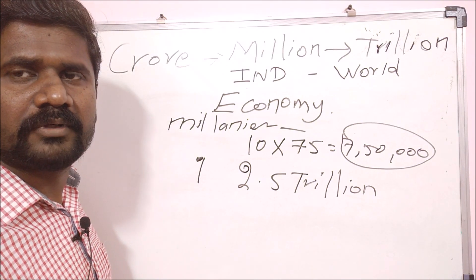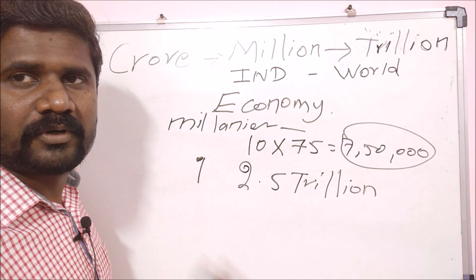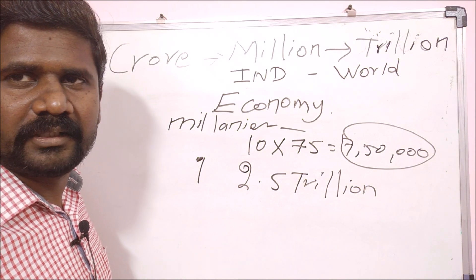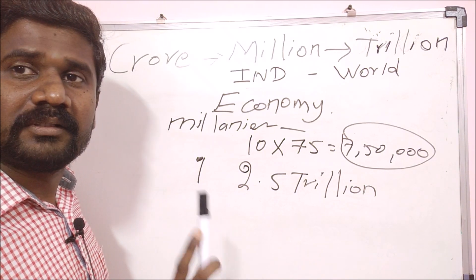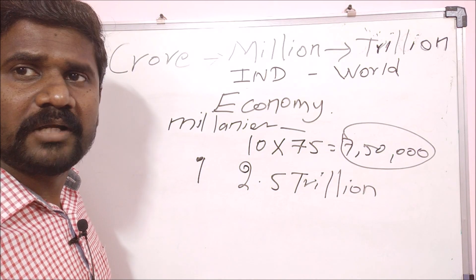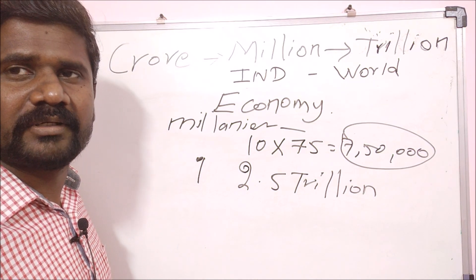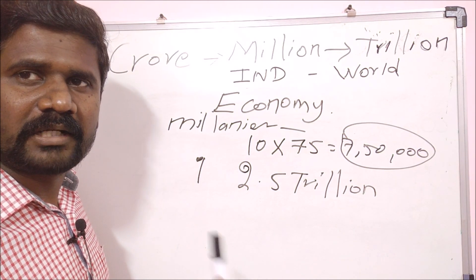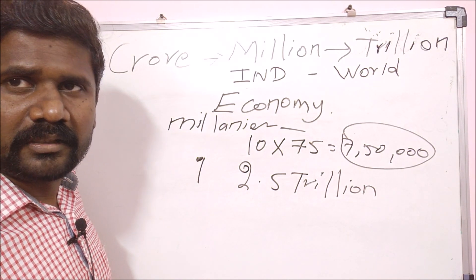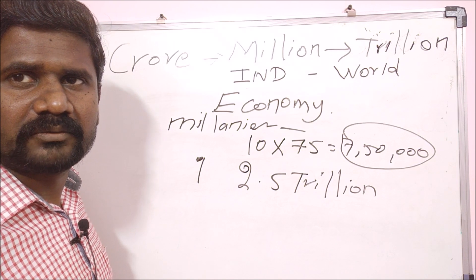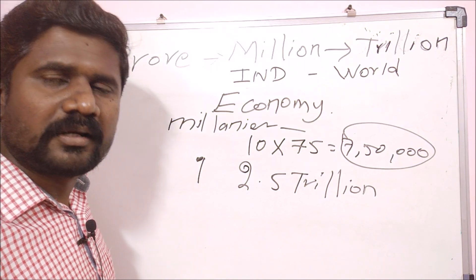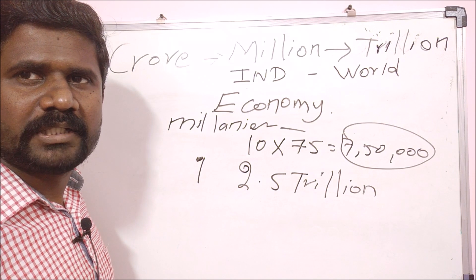So 2.5 trillion dollars — that is simple. That is the dollar amount multiplied by the currency rate of 75. So that is the main point — the number system is very important, and you need to account for the currency conversion as well.